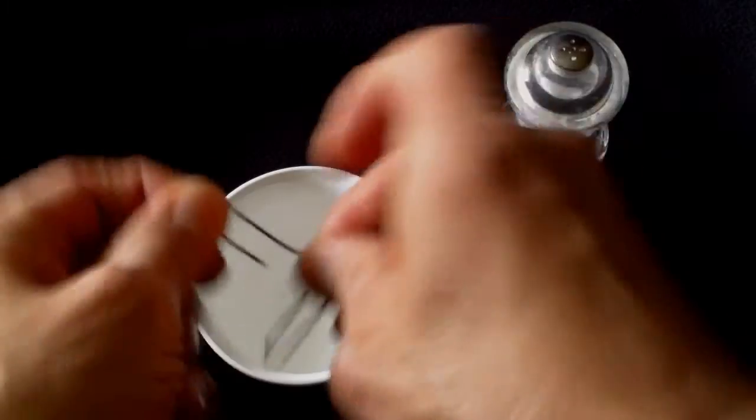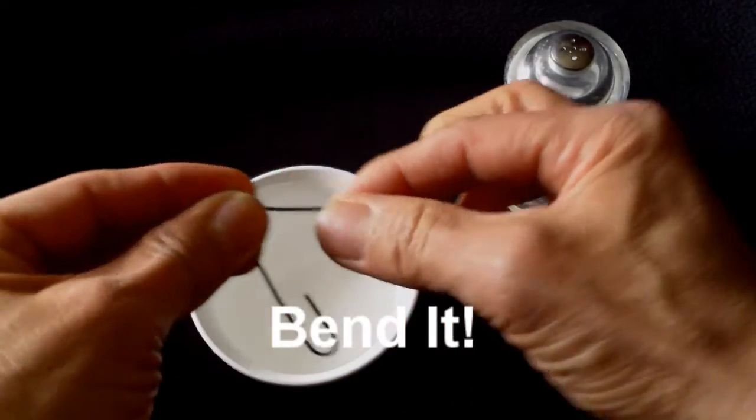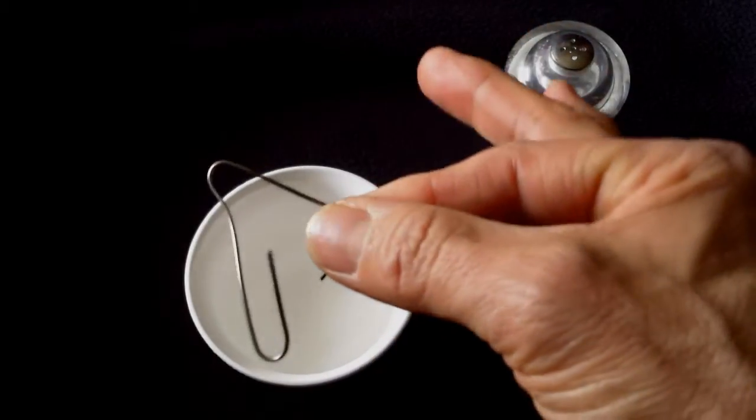Just take an ordinary paper clip and bend it as you like. So you have a bent paper clip.